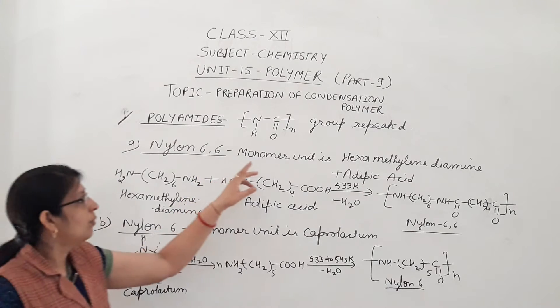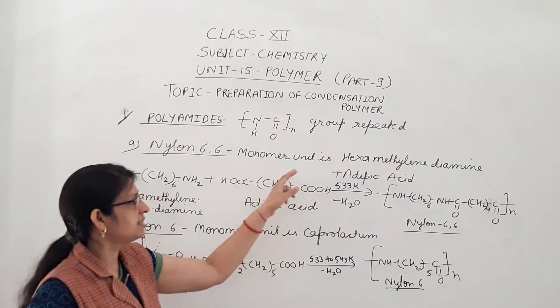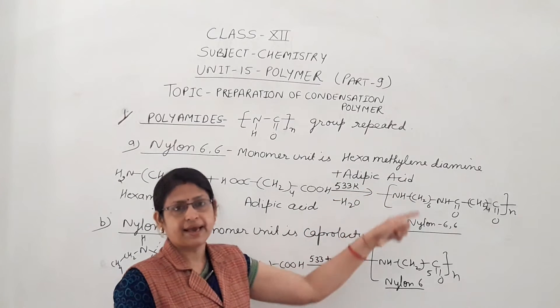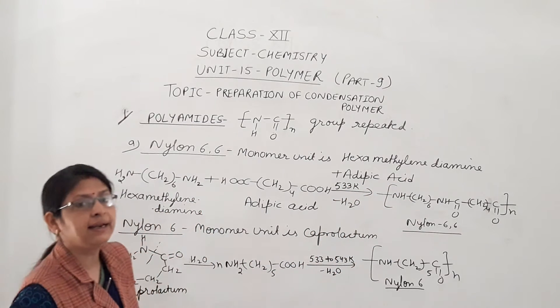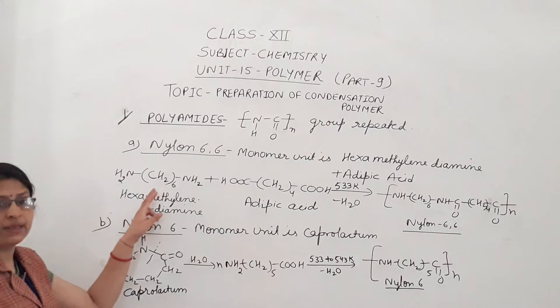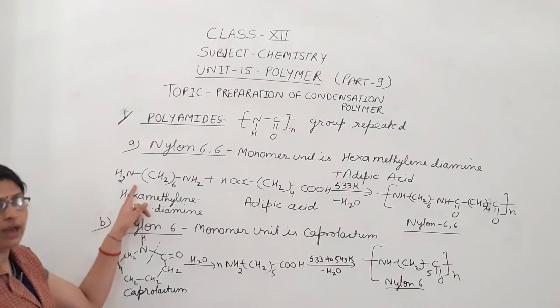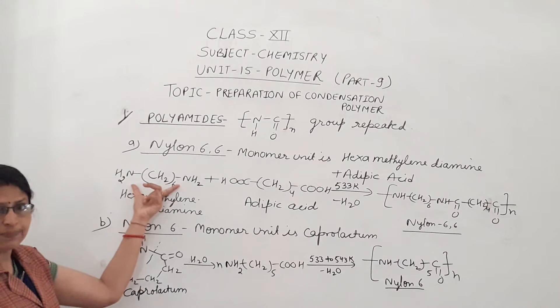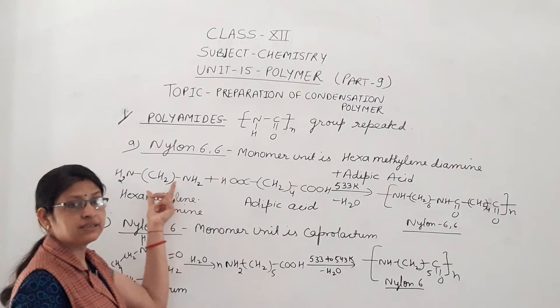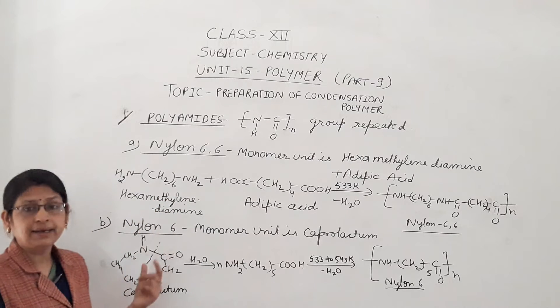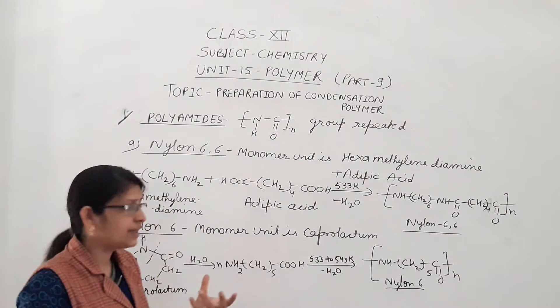Nylon 6-6. Monomer unit of nylon 6-6 is hexamethylenediamine and adipic acid. Hexamethylenediamine - what is hexamethylenediamine? (CH2)6 with NH2 at both ends. Di-amino group is present in hexamethylenediamine and adipic acid.